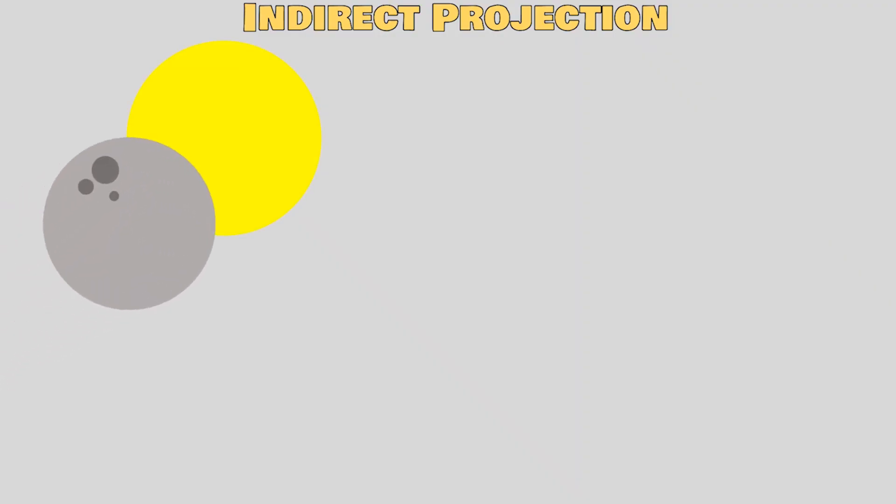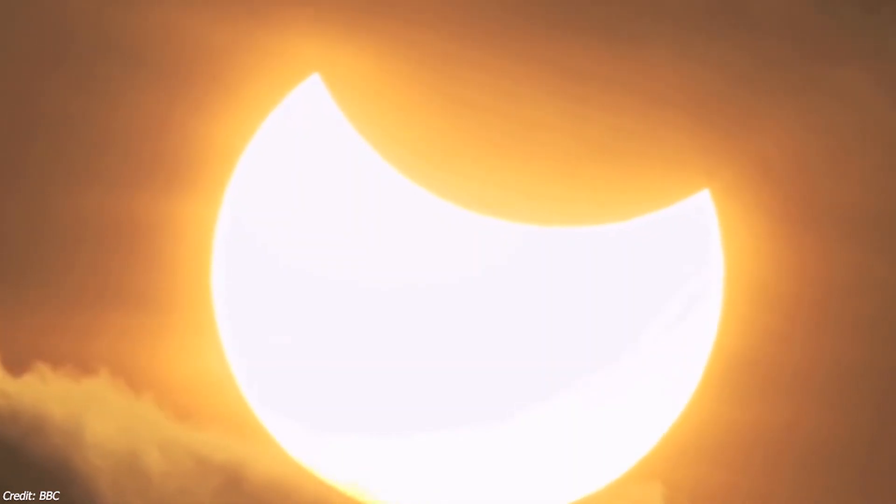This can be done by projecting an image of the disk onto a white piece of paper or card using a telescope or a pinhole camera. The projected image of the sun can then be safely viewed. So, let's hope for a clear sky to observe the eclipse safely.